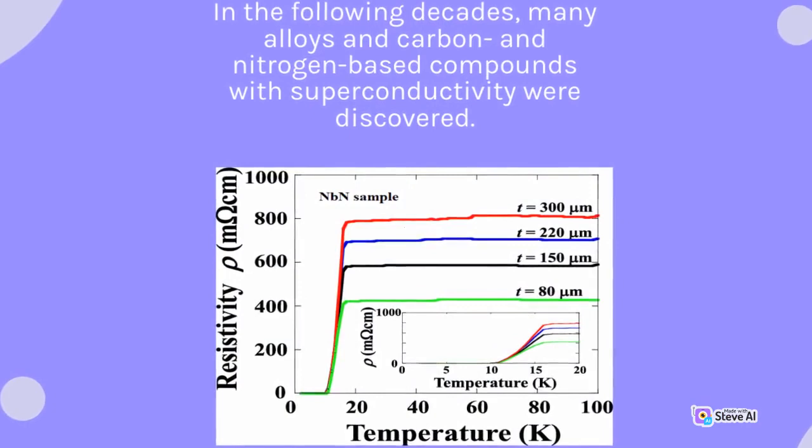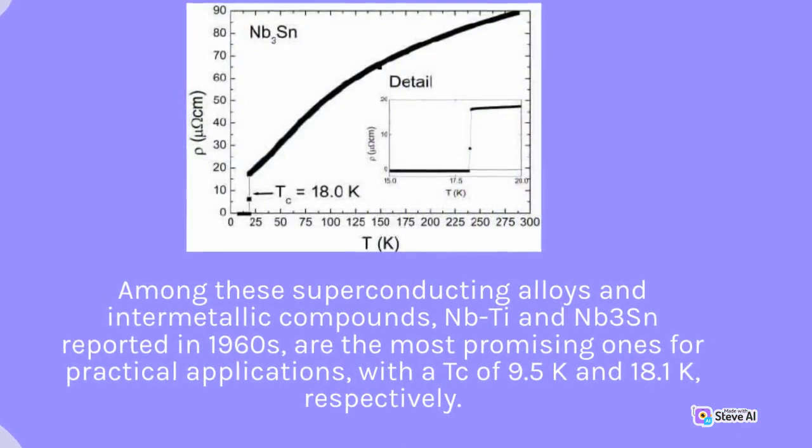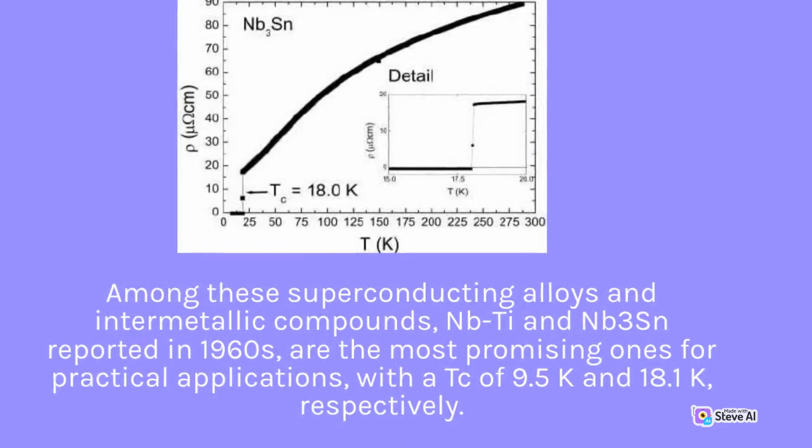Among these superconducting alloys and intermetallic compounds, NbTi and Nb3Sn, reported in the 1960s, are the most promising ones for practical applications, with Tc values of 9.5 K and 18.1 K, respectively.